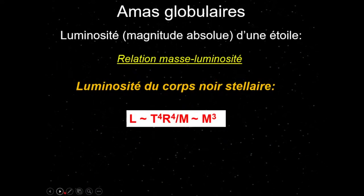La luminosité intrinsèque d'une étoile dépend de la luminosité du corps noir de sa photosphère, qui émet de façon thermique. Elle évolue comme la puissance 4 de la température et le carré du rayon, divisée par la masse. On obtient en gros une luminosité qui varie comme le cube de la masse. Une étoile 10 fois plus massive sera environ 1 000 fois plus lumineuse — c'est un ordre de grandeur.